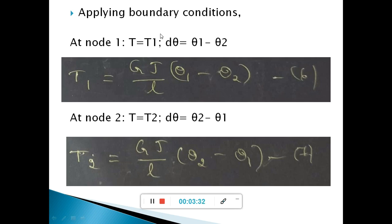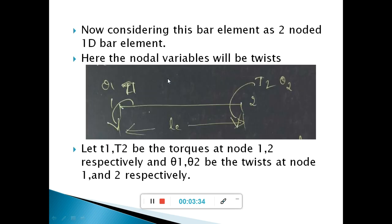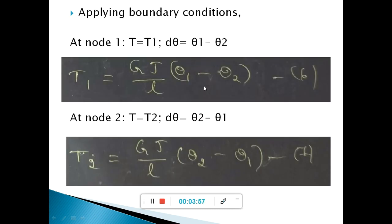Now let us apply the boundary conditions. In the FEM model, at node 1, d equals d1 and theta equals theta-1; at node 2, d equals d2 and theta equals theta-2. At node 1, d-theta is theta-1 minus theta-2. At node 2, d-theta is theta-2 minus theta-1.